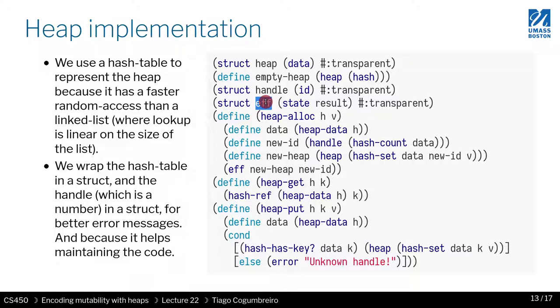Okay, so heap allocation, which we covered, has only four lines of code, so it's quite simple. The idea is that the first thing we do is we retrieve the hash table, which we call data.